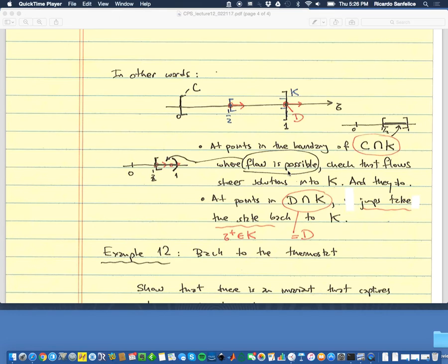From this point, the jump map takes you back to the half, and every time you start from the half, you flow within this interval. So we said that this set was invariant. Now, invariant could be backward invariant or forward invariant. We're interested only in forward invariants.